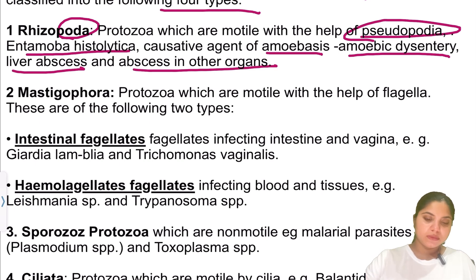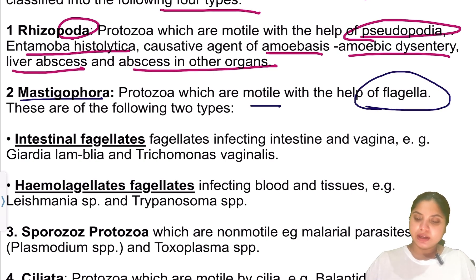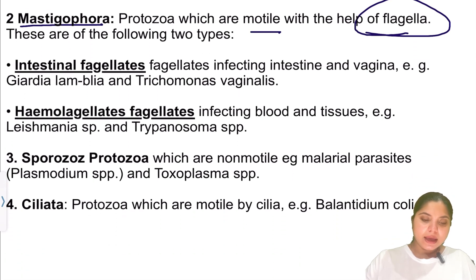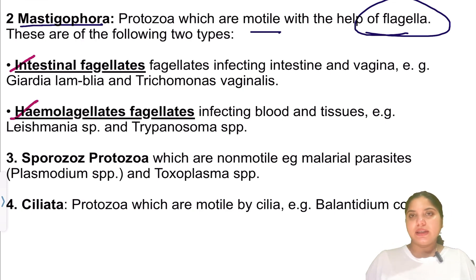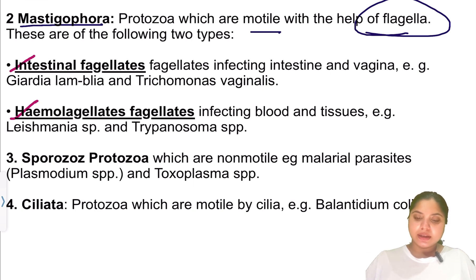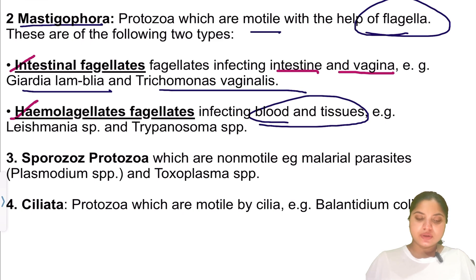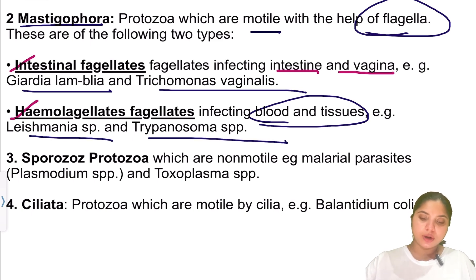The second class is Mastigophora — protozoa that are motile with the help of flagella. These are divided into two types: intestinal flagellates, which cause disease in the intestine and vagina (examples: Giardia lamblia and Trichomonas vaginalis), and hemoflagellates, which produce disease in blood and tissue (examples: Leishmania species and Trypanosoma species).